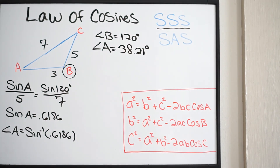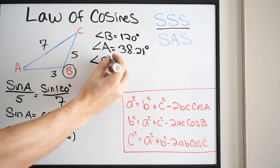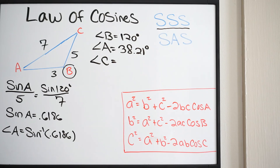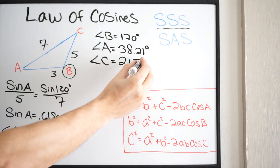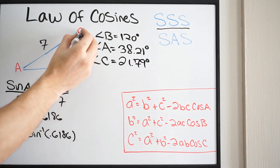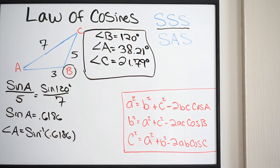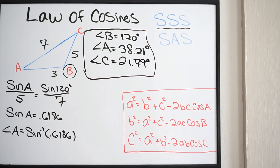Now at this point it's pretty simple. All we have to do is start at 180 and subtract our two known angles, and that will give us angle C. So 180 minus 120 minus 38.21 gives us 21.79 degrees. So there are your angles. That is how you use the law of cosines for a triangle that is side-side-side. The key takeaway: always pick the largest angle first, so you can solve the rest of the problem using the law of sines.